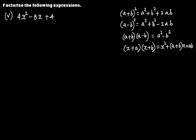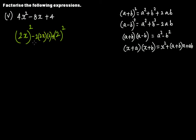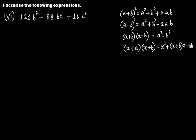For 4x² - 8x + 4: write 4x² as (2x)² and 4 as 2². Then -8x = -2·(2x)·2, so this is of the form a² - 2ab + b² = (a - b)², where a = 2x and b = 2. The factorization is (2x - 2)².